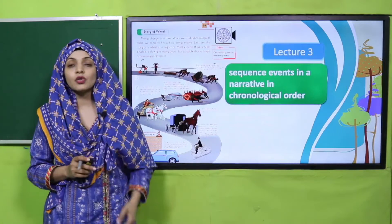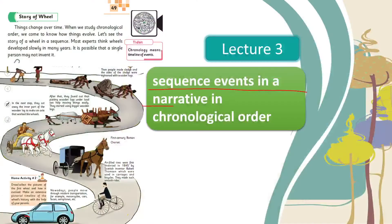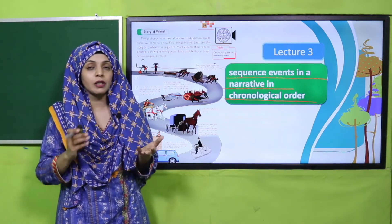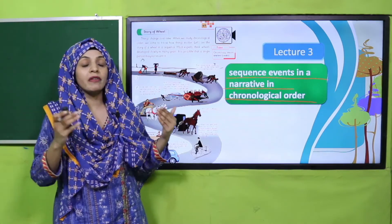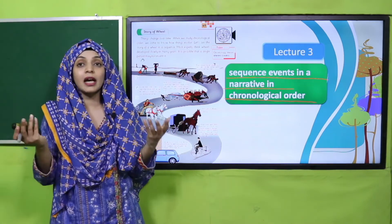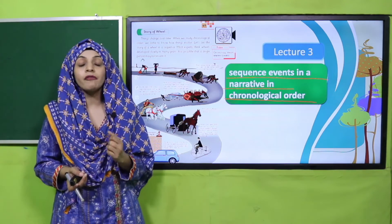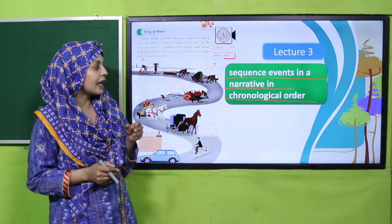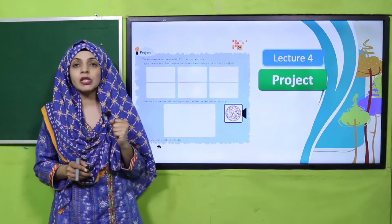Then we move to Lecture Number Three, where students will sequence events in chronological order. The story of the wheel will be discussed — how the wheel was developed, how wheels were used in the past, and how it was very difficult for people to transport things from one place to another. They had to either carry things or push them. Over time, people developed better solutions, leading to modern transportation with wheels, which is the most modern and innovative form. This will be covered on pages 49 and 50.